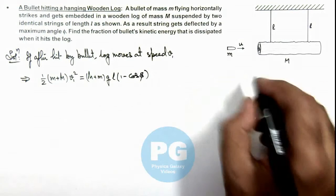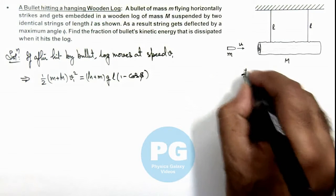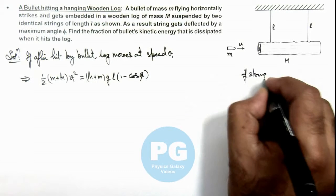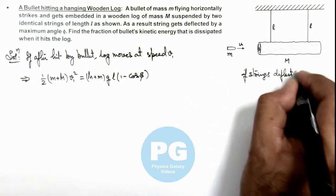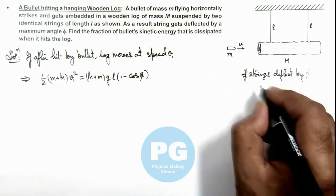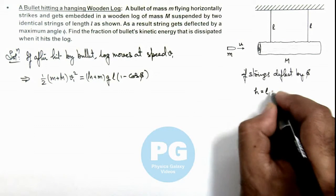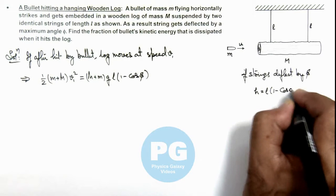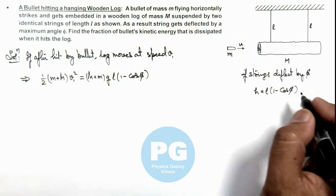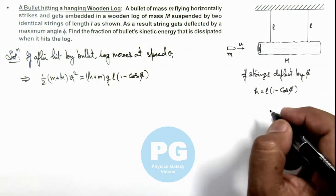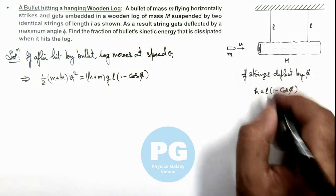Here we can say if strings deflect by φ, then we can write the height raised by this wooden log is l(1 - cos φ). This we have used several times while studying the concept videos related to work and energy.